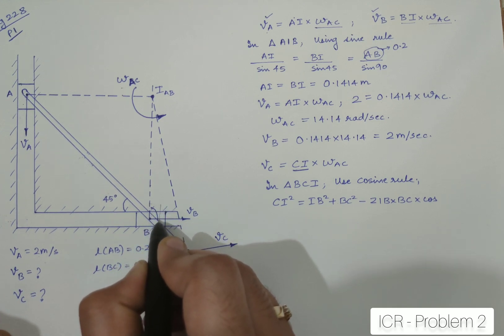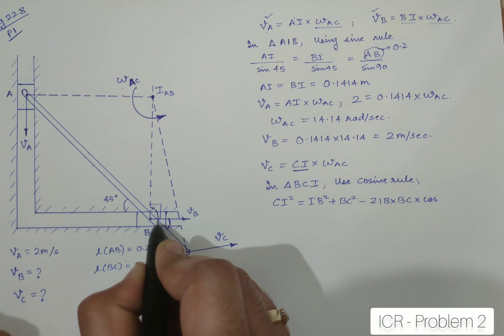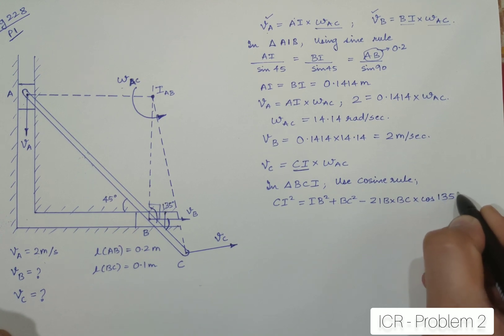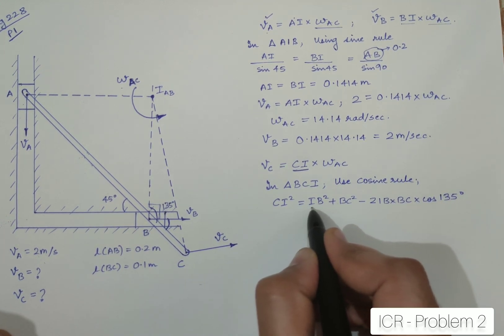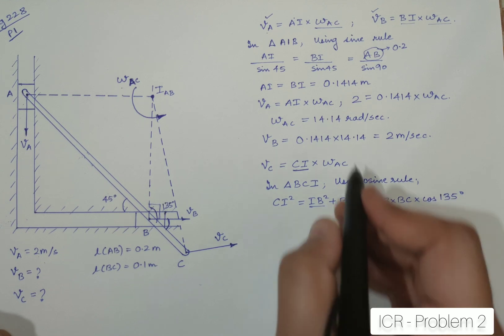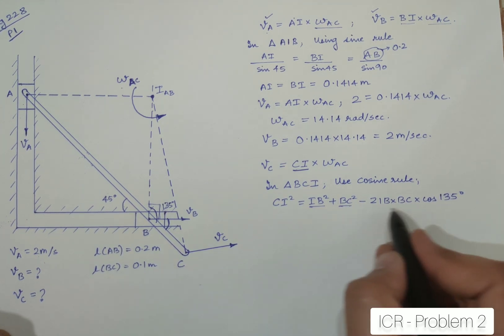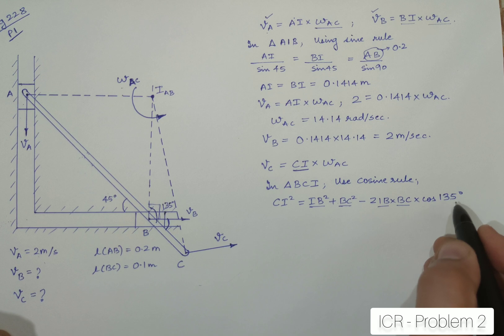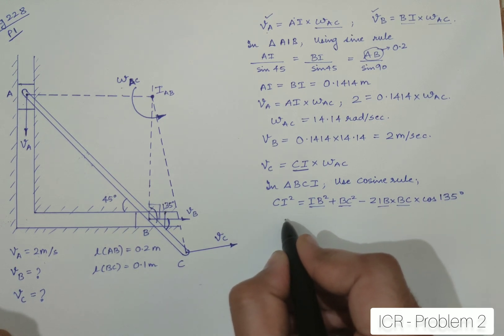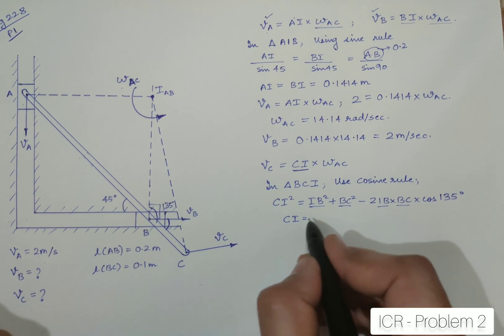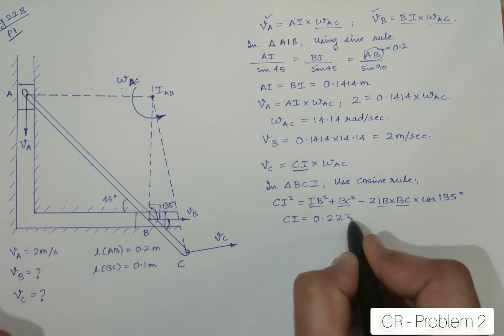And this is just the extension, so this has to be 45 degrees. So 90 plus 45 total will give you this angle as 135 degrees. So when I write 135 degrees over here, I can substitute my values now. IB I have already found out which was 0.1414, BC I already know which is 0.1, substitute the same values over here with the cos 135. You will get CI, so CI comes out to be equal to 0.223 meters.